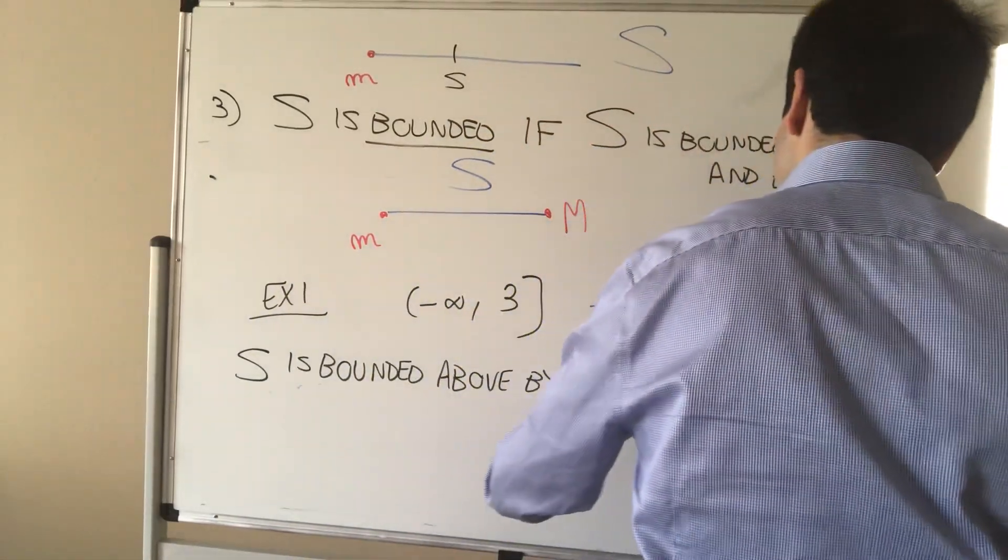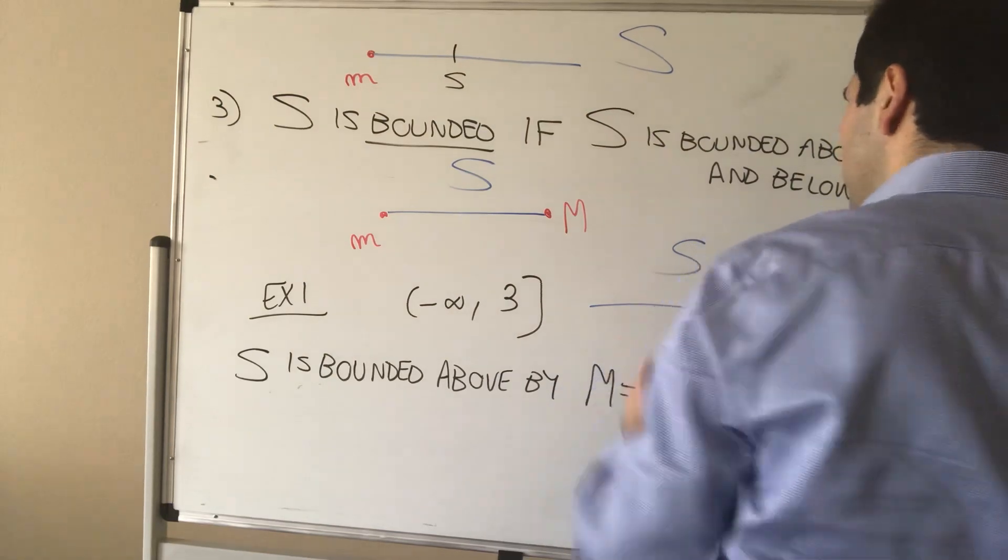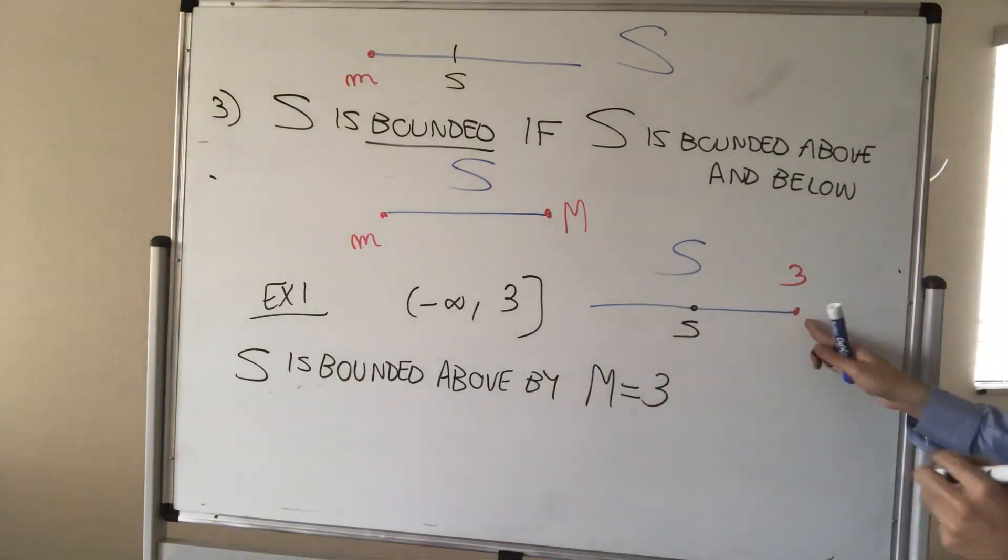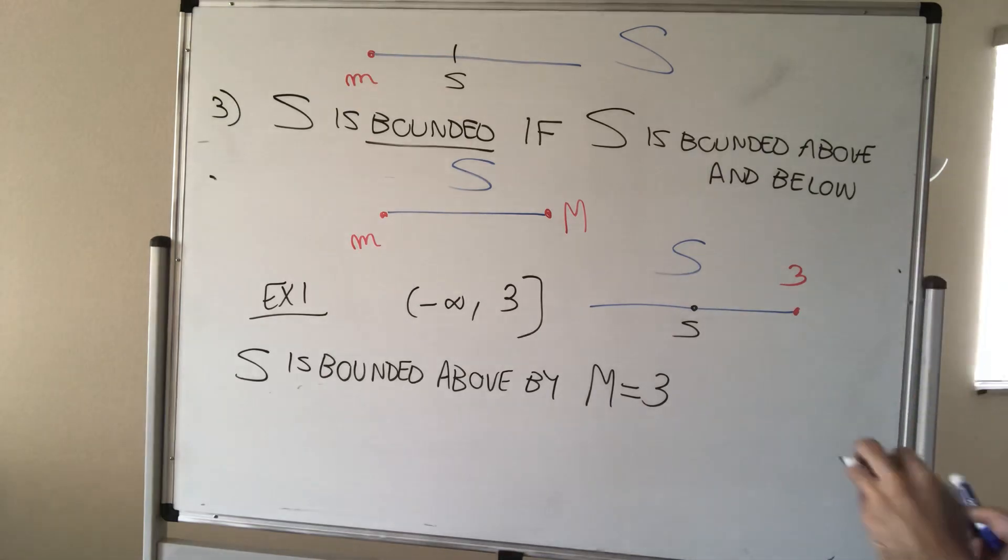By M equals three, simply because if you take any random element as S, it's guaranteed to be less than or equal to three, but it's not bounded below.